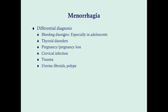Looking at the differential diagnosis of menorrhagia: bleeding disorders, particularly von Willebrand's disease; thyroid disorders, either hypo- or hyperthyroidism — so get a thyroid function test; pregnancy or pregnancy loss — rule out with a beta-hCG level; cervical infection from a sexually transmitted disease — lower suspicion here since she denies sexual activity, but generally apparent on pelvic exam; trauma, which comes out in history; and uterine fibroids and polyps.